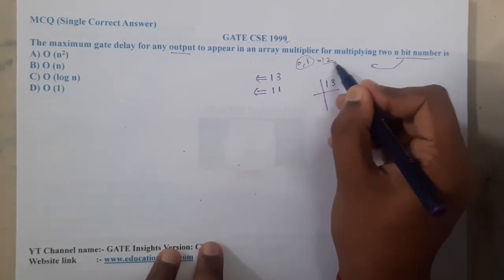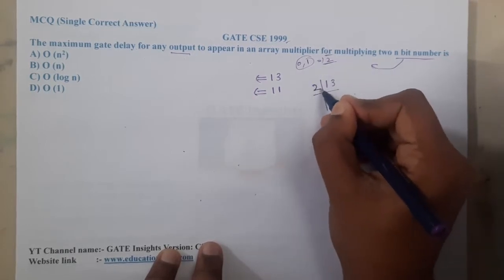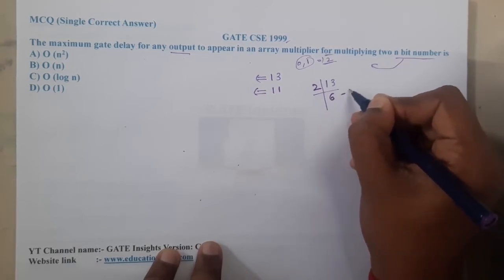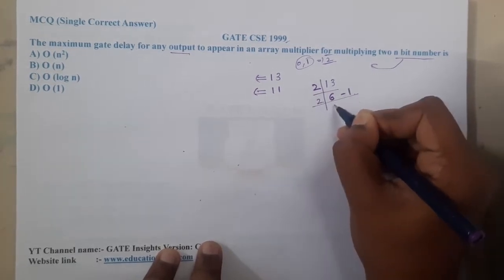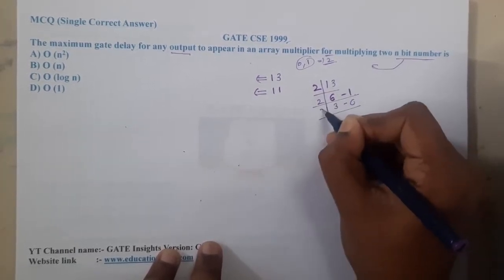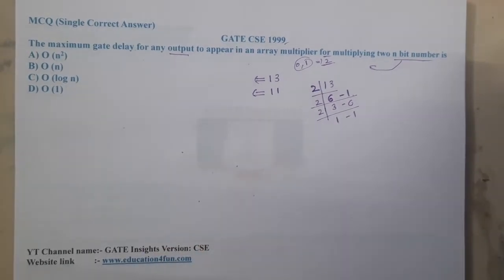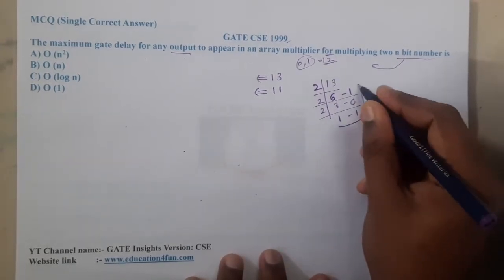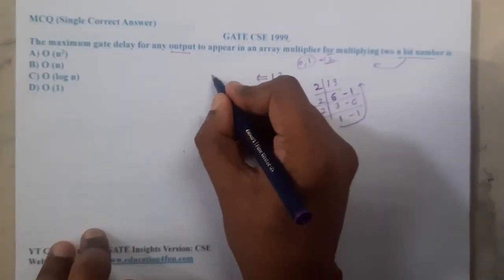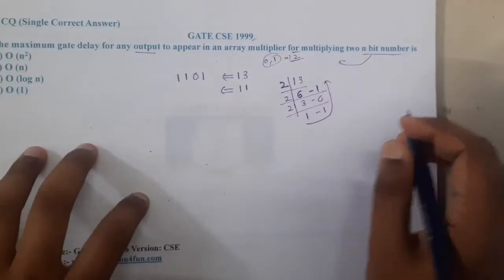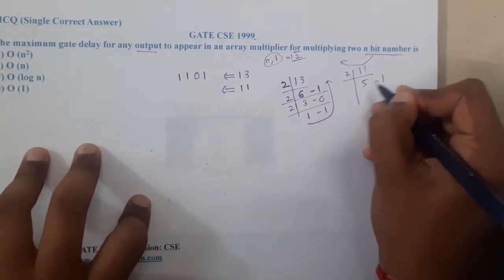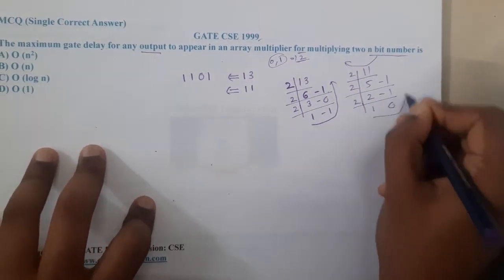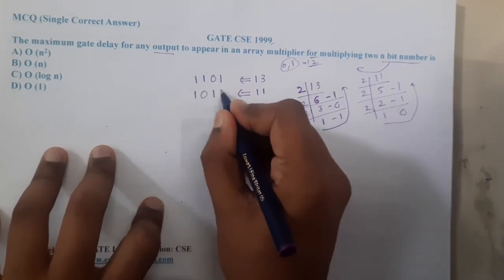Divide by 2 repeatedly and write the remainder on the right side. For 13: 13÷2 = 6 remainder 1, 6÷2 = 3 remainder 0, 3÷2 = 1 remainder 1, 1÷2 = 0 remainder 1. Reading from bottom to top gives 1101. Similarly for 11: 11÷2 = 5 R1, 5÷2 = 2 R1, 2÷2 = 1 R0, 1÷2 = 0 R1 — giving 1011.